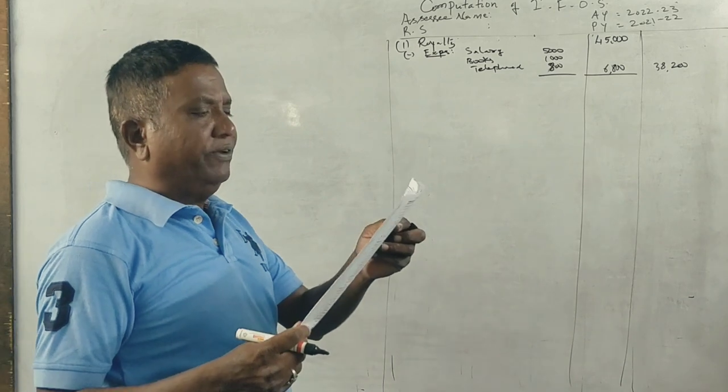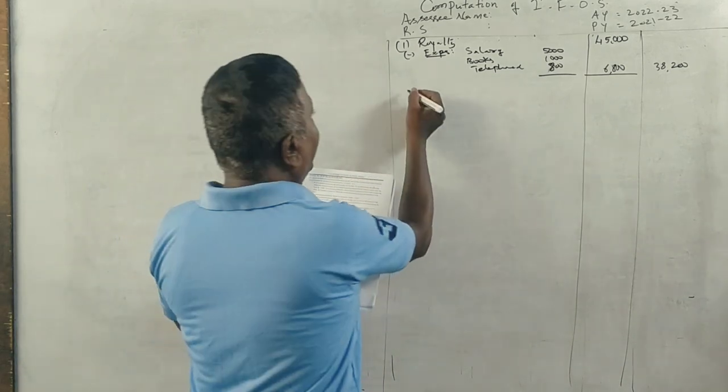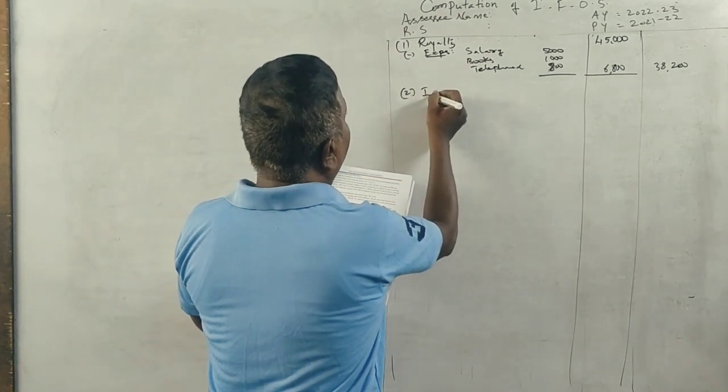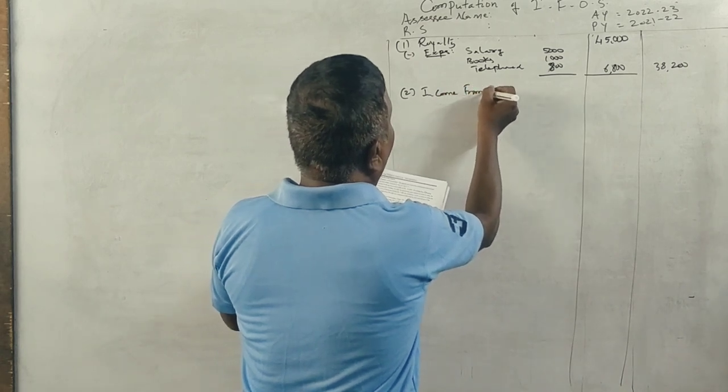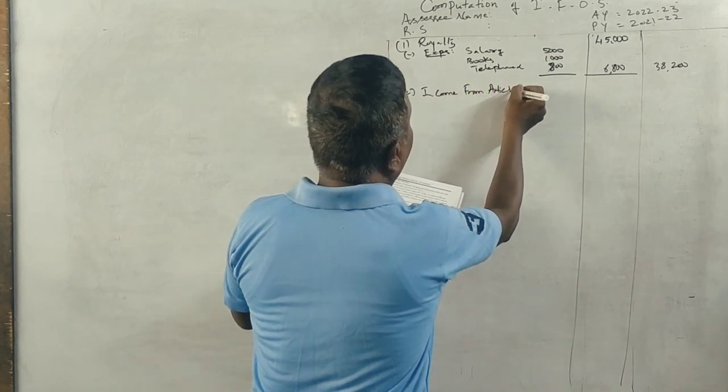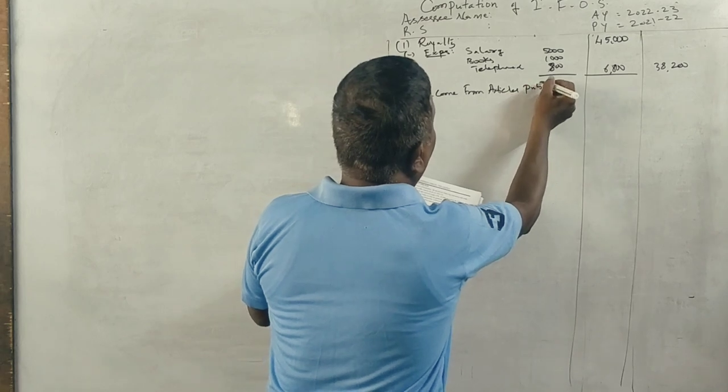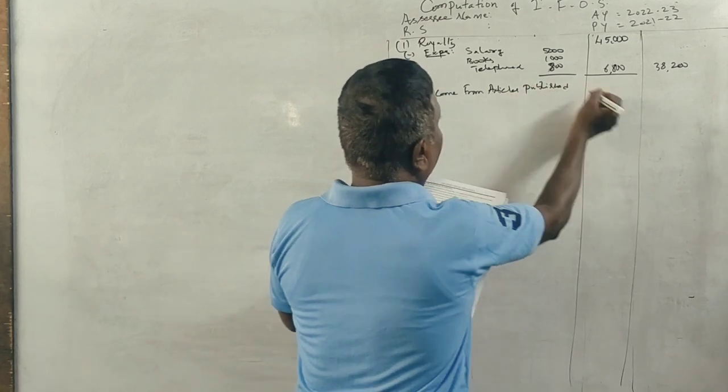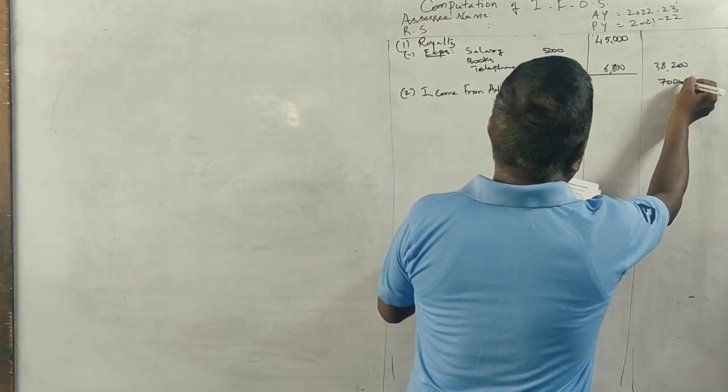Next, income from articles published in Economic Times: Rs. 7,000. This is fully taxable.